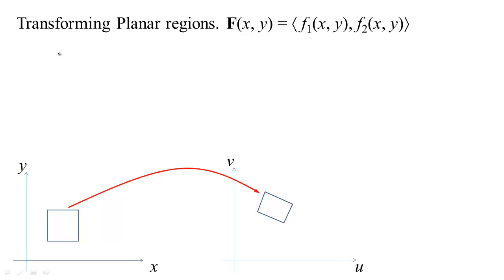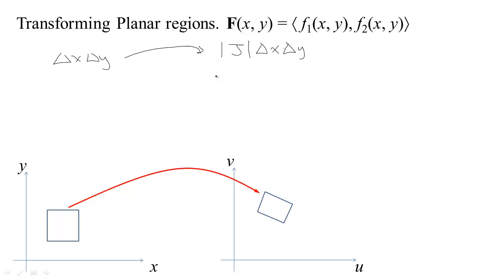If we start off with a region that has area delta x, delta y, and we apply some transformation, we know that the new area is going to be some stretching factor times delta x, delta y. We figured out that that stretching factor can be found by taking the determinant of the matrix of first derivatives, or the total derivative matrix for the transformation.